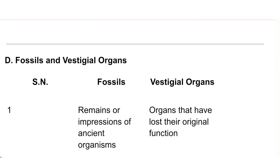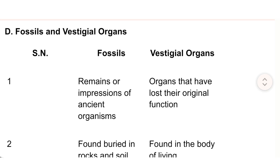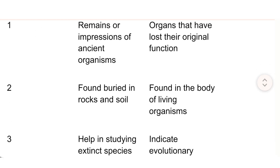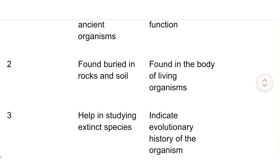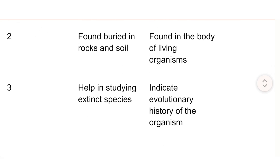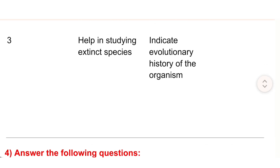D) Fossils vs Vestigial organs: 1) Fossils are remains or impressions of ancient organisms; vestigial organs are organs that have lost their original function. 2) Fossils are found buried in rocks and soil; vestigial organs are found in the body of living organisms. 3) Fossils help in studying extinct species; vestigial organs indicate the evolutionary history of the organism.